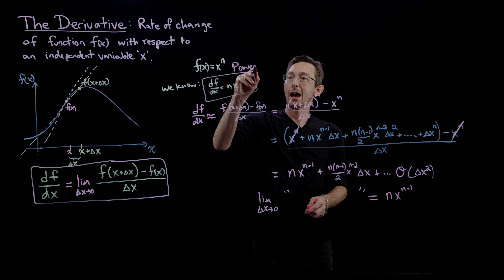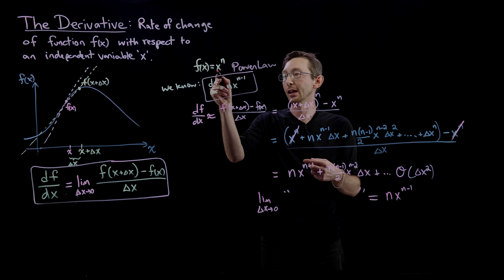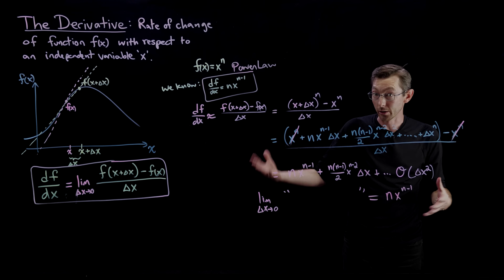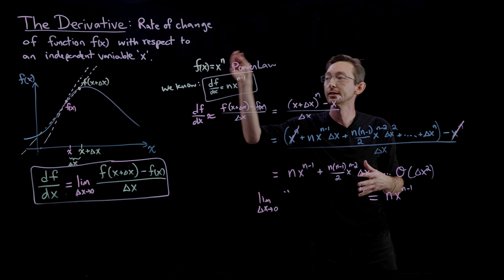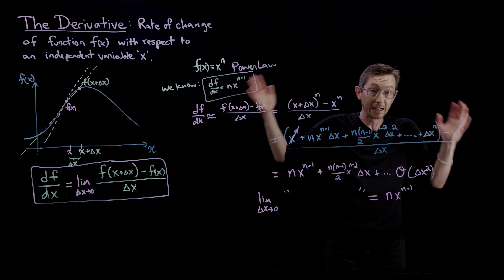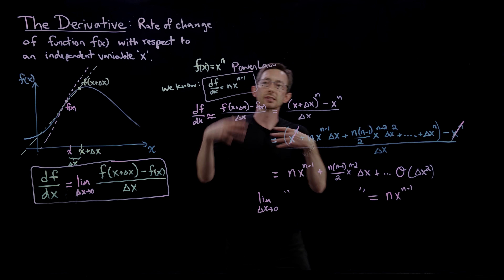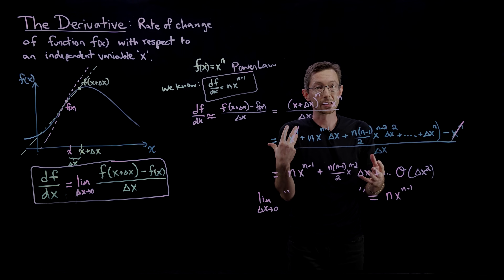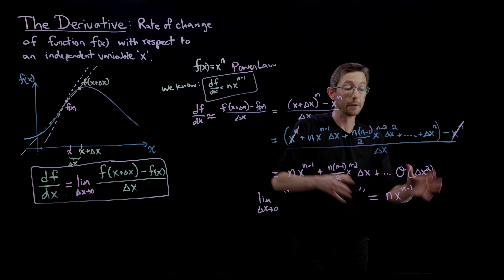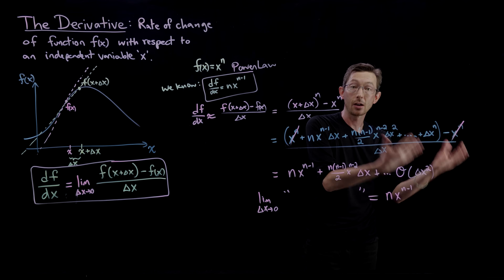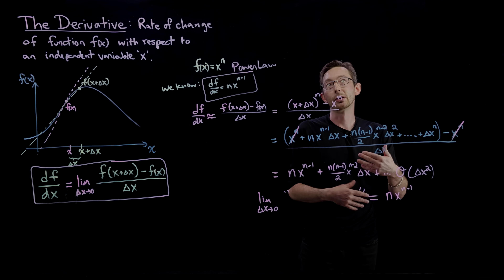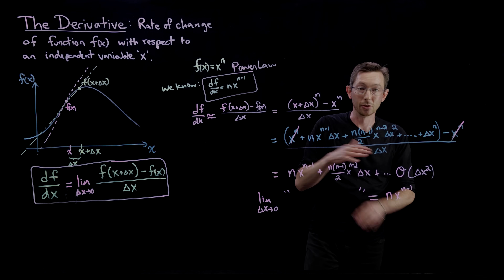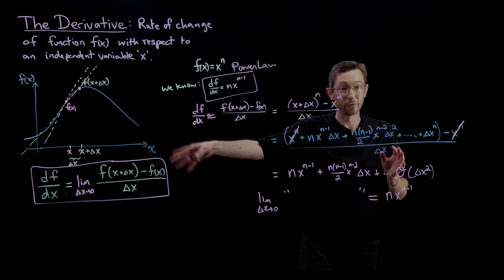So you can now take the derivative of any polynomial in x. You can also do this for sine of x, cosine of x, e to the x, and log of x — plug those into the limit definition and use algebra and trigonometry tricks to derive that the derivative of sine is cosine, the derivative of cosine is minus sine, the derivative of e^x is e^x, and the derivative of log x is 1 over x.